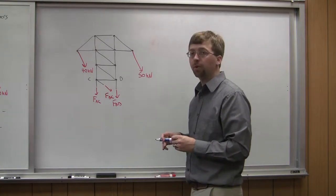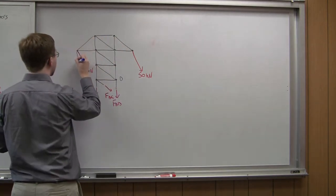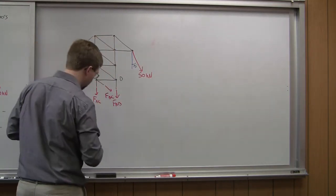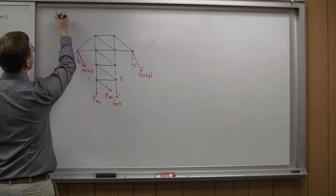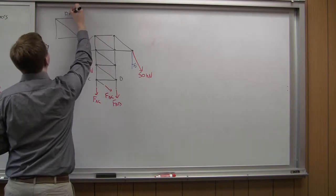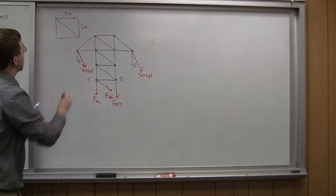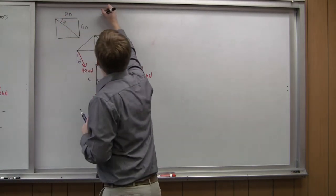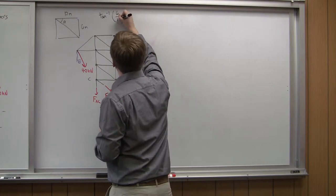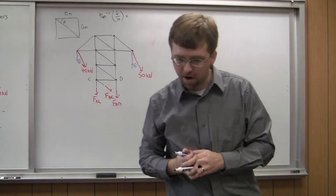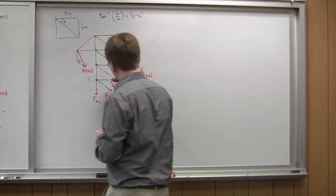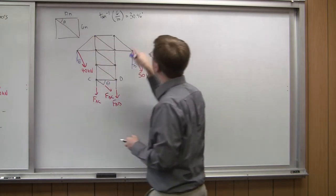The angles and dimensions are going to be important. This angle for the 40 kN load is 15 degrees, and this angle for the 50 kN load is also 15 degrees. For the diagonal member, I've got a triangle — from my original diagram I had a box that was 10 meters across and 6 meters this way. So to find angle theta, I take the inverse tangent of opposite over adjacent: arctan(6/10), which gives me theta of approximately 30.96 degrees.